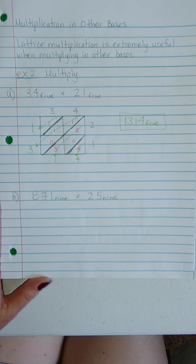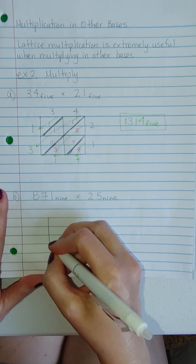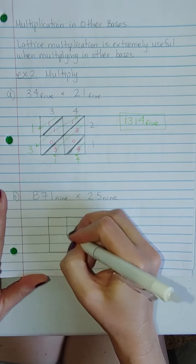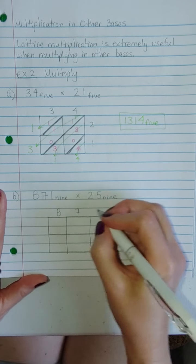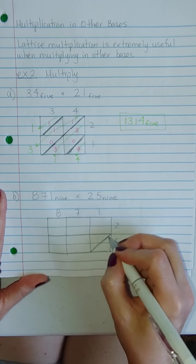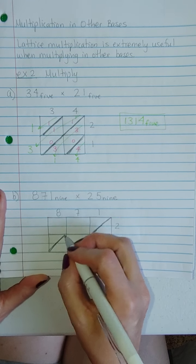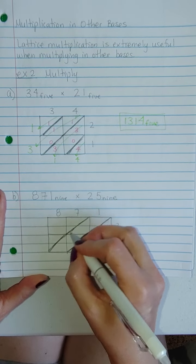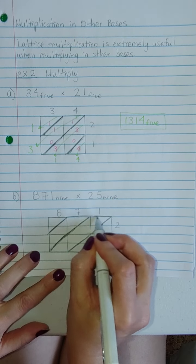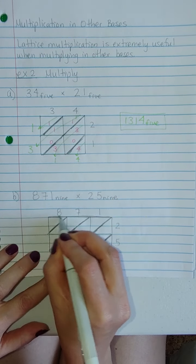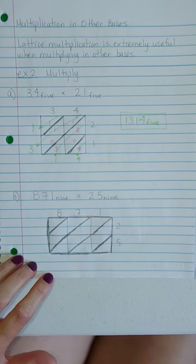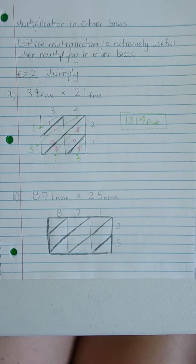All right, so I'm going to draw the lattice for you for this base 9 problem, and then see if you can do that one without me. So we have 8, 7, 1 times 2, 5, get my diagonals in there. I'm trying to darken those just so you can tell where my diagonals are going to be that you add along. All right, all this is in base 9.